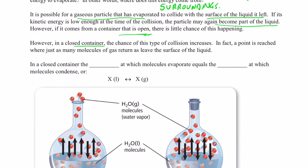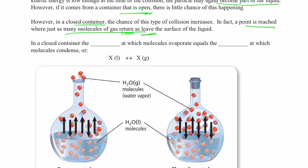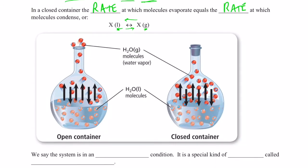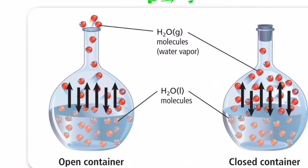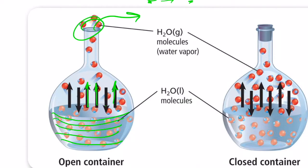What if we have a closed container? The chance of molecules returning and colliding actually increases. In fact, a point is reached where just as many molecules of gas return as leave the surface of the liquid. So in a closed container, the rate at which molecules evaporate will equal the rate at which molecules condense — my liquid is forming gas as quickly as gas molecules are returning back to the liquid phase. In an open container, molecules leaving are probably not going to find their way back in, so the water level gets lower and lower until all the water has evaporated and left.